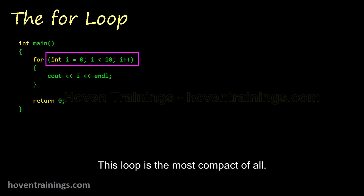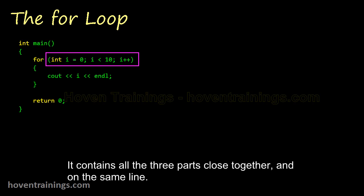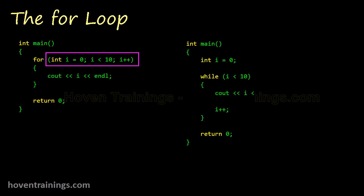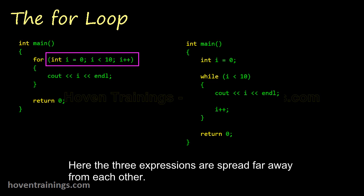This loop is the most compact of all. It contains all the three parts closed together and on the same line. This is an equivalent while loop. Here the three expressions are spread far away from each other.